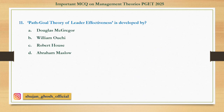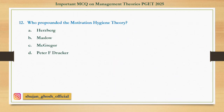Question number 11: Path-goal theory of leader effectiveness is developed by — Option A: Douglas McGregor. B: William Ouchi. C: Robert House. D: Abraham Marshall. Answer is Robert House. Question number 12: Who propounded the motivation-hygiene theory? Option A: Herzberg. B: Marshall. C: McGregor. D: Peter F. Drucker. Answer is Herzberg.